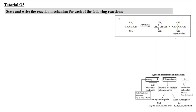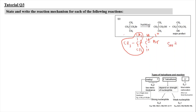For tutorial question 3C, we have a tert-butyl group attached with CH₂Br. Expanding the structure gives a primary haloalkane because this carbon is attached with one alkyl group — so we would expect SN2. However, because it consists of a very large tert-butyl group, there is high steric hindrance and the nucleophile is blocked from attacking. When steric hindrance is high, for example in CH₃C(CH₃)₂CH₂Br, it will undergo SN1 instead of SN2.